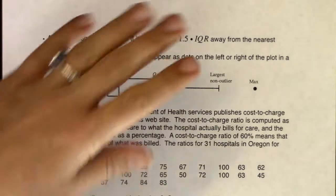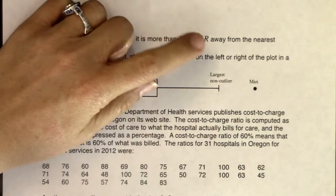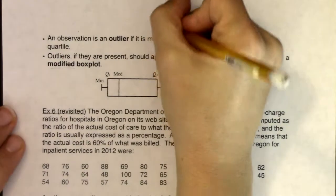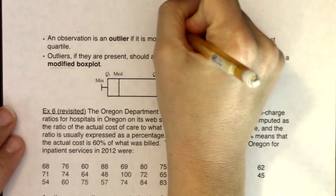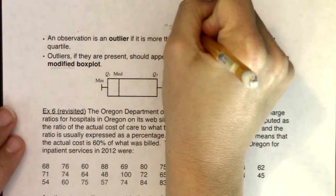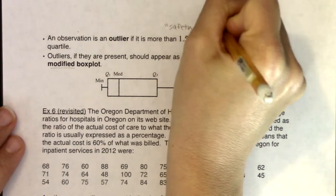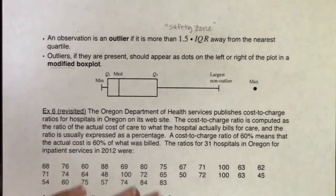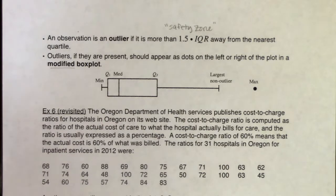So with all of that, let's crunch some numbers. I'm going to create something I call a safety zone. It's going to require three steps to calculate. Now this is not an official stats term — it's just something I came up with. I wanted some kind of algorithm to determine if you have outliers, so I created this three-step process.